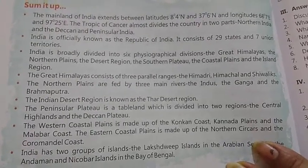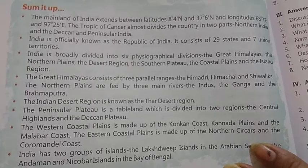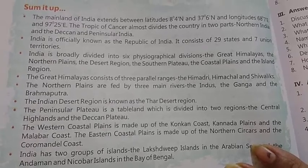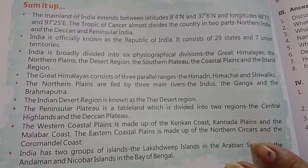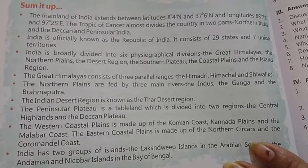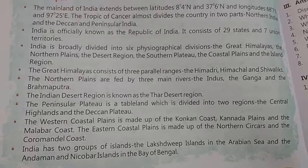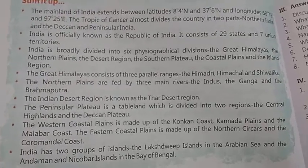The mainland of India extends between latitudes 8°4' North and 37°6' North, and longitudes 68°7' East and 97°25' East. The Tropic of Cancer almost divides the country into two parts: northern India, and the Deccan and Peninsular India.